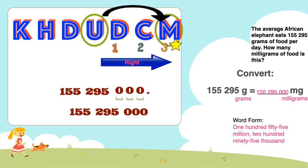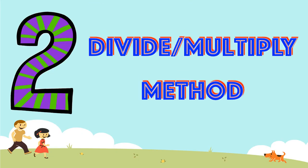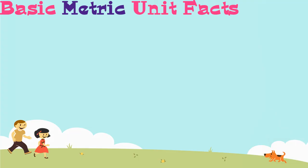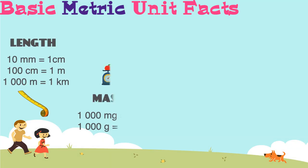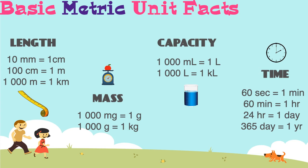Now, there is another method that we can use — the divide or multiply method. When using this method, we must make sure that we know the basic metric unit facts. Let's take a look at the basic metric facts for length, mass, capacity, and time. We must know these facts when we want to convert using the divide or multiply method.